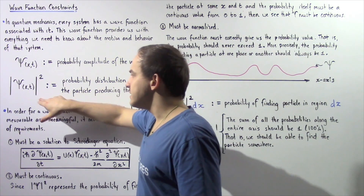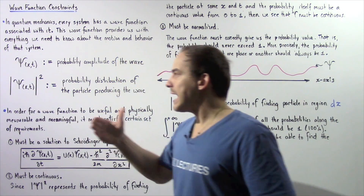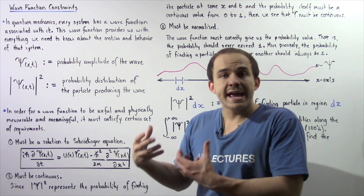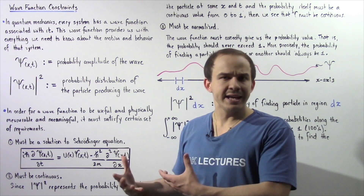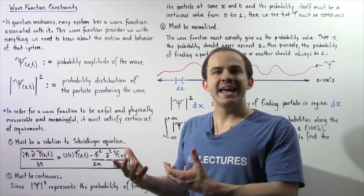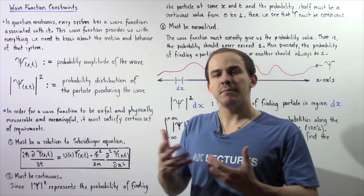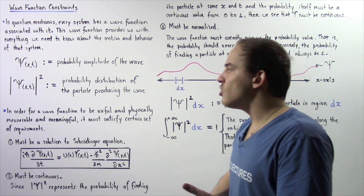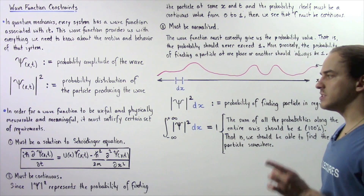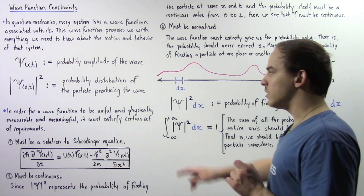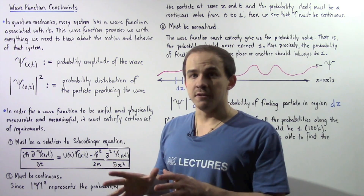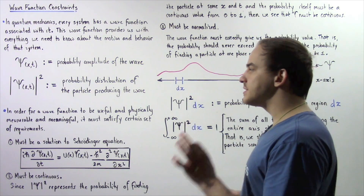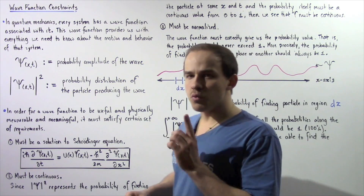For this quantity to actually make sense, the probability must be between 0 and 1. We cannot get a probability that is negative, and likewise we cannot get a probability that is greater than 1. So in order for a wave function to be useful, physically meaningful, and measurable, it must satisfy a certain set of requirements.